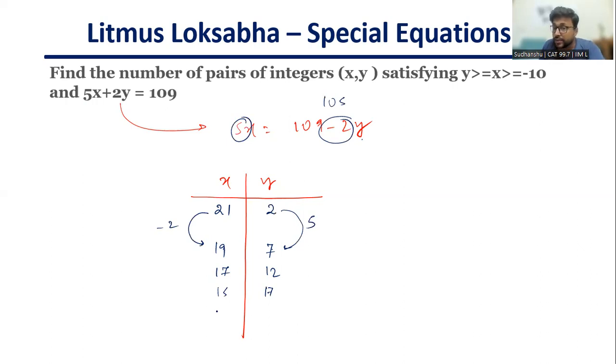Now the only thing which becomes very important here is the condition that is there. The condition is y must be greater than or equal to x and x must be greater than or equal to minus 10. Now in the first few solutions, if you see, x is greater than y, so this condition is not being satisfied. So this cannot be a solution to this special equation. Similarly, this can't be a solution, this can't be a solution, but if you look at this solution here, y becomes greater than or equal to x, so therefore this is an acceptable solution and x is also greater than or equal to minus 10.